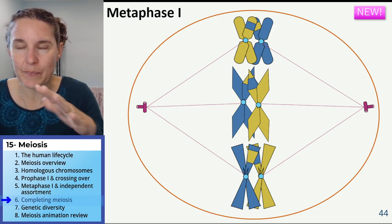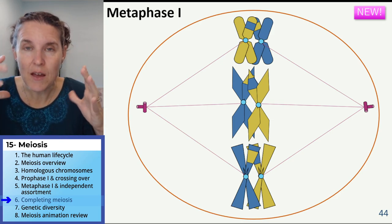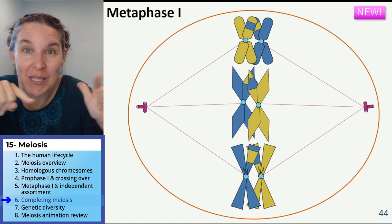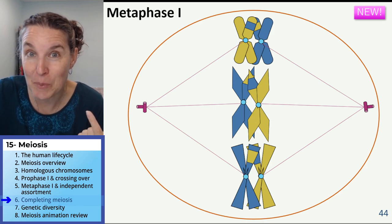And remember, you could do this whole thing four times. We saw the four different alignments that were possible if you have three homologous pairs.